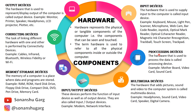Next, we have processing devices. The hardware that is used to process the data is called a processing device. It is the hardware we use to process data and convert it into information. We call these processing devices. Examples include: motherboard, video card, and sound card — we will see these in detail in the next video.